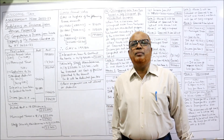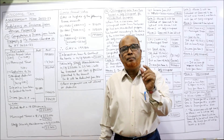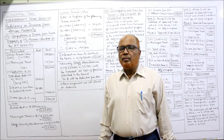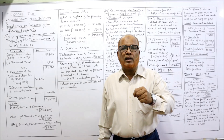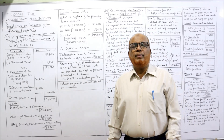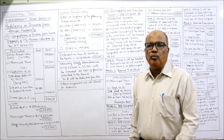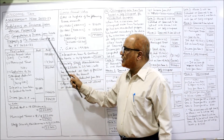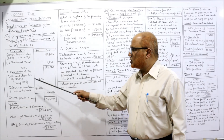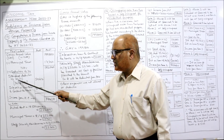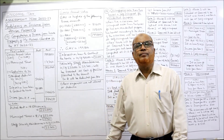The new point in this problem is that municipal taxes and staff security maintenance are given in percentage, but we need the amount. One key point: security staff maintenance is a service provided by the owner to the tenant. This service will be deducted from ARV (actual rental value) — that is the new point. So for computation of income from house property of Mr. Mahesh Chandra, gross annual value and municipal taxes will be computed in the working note.